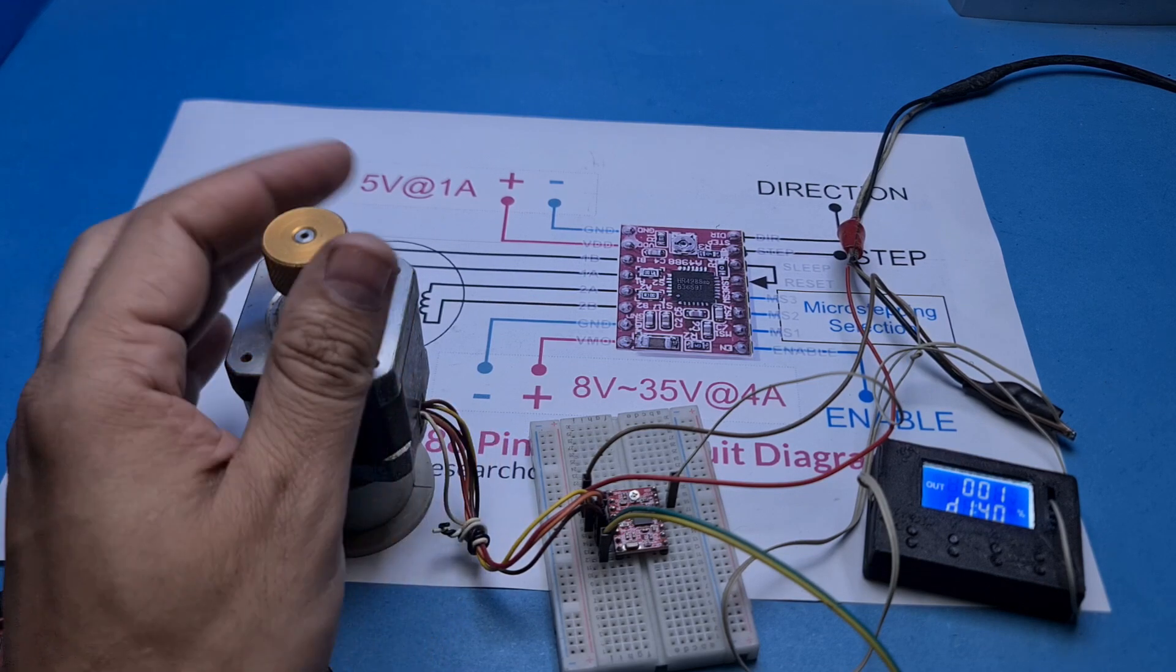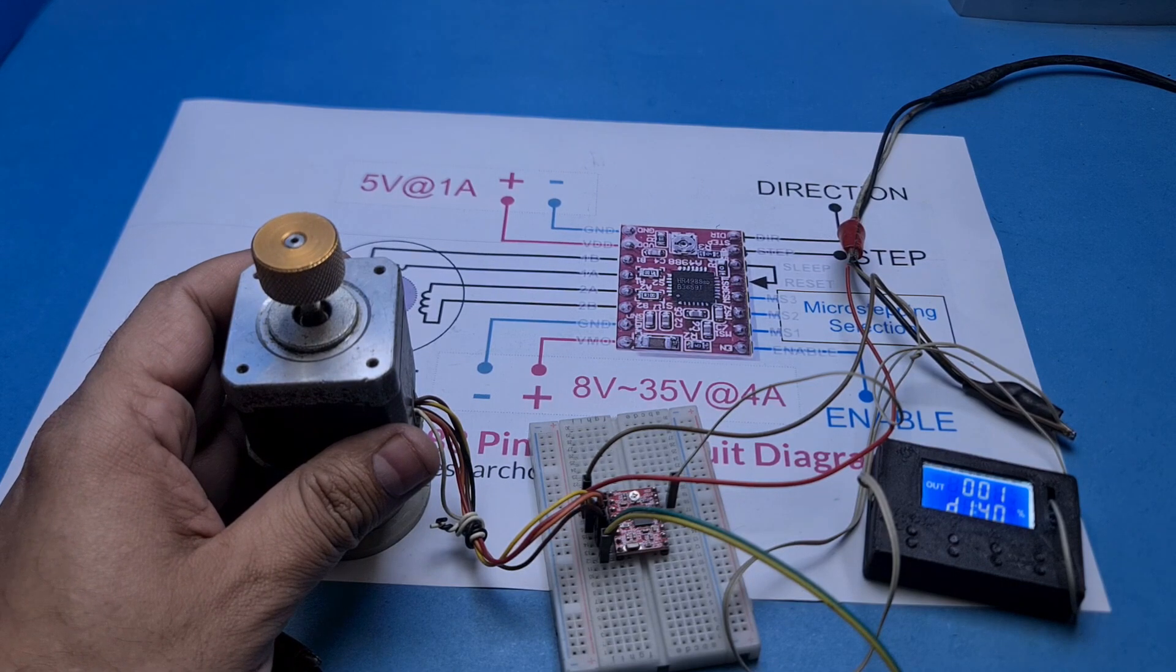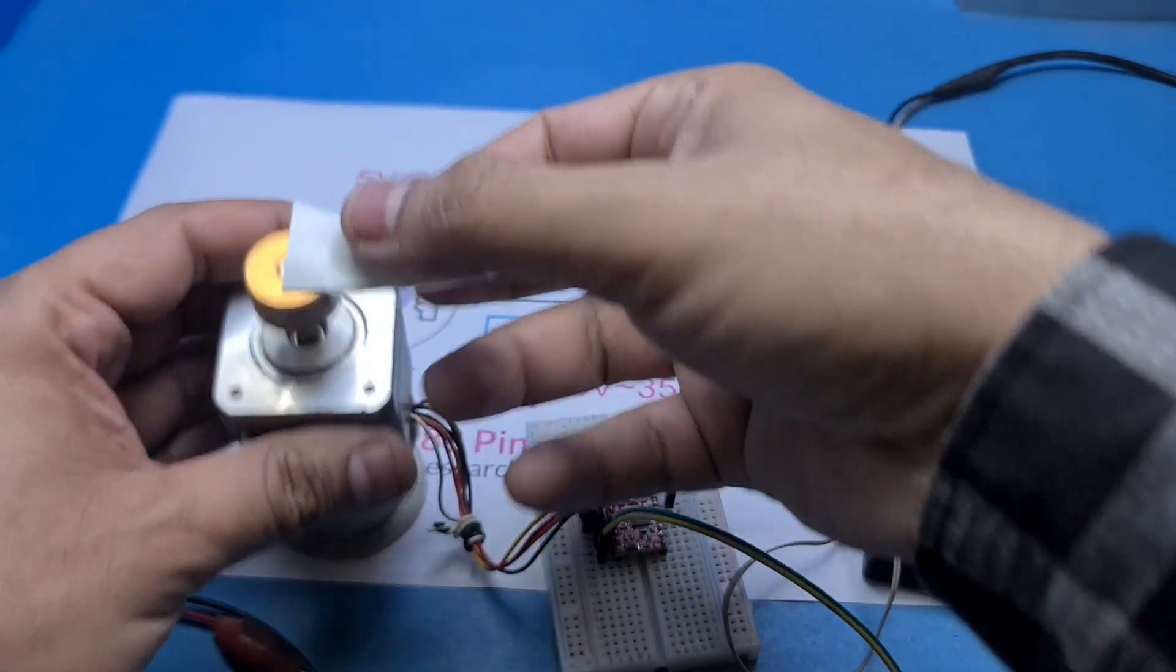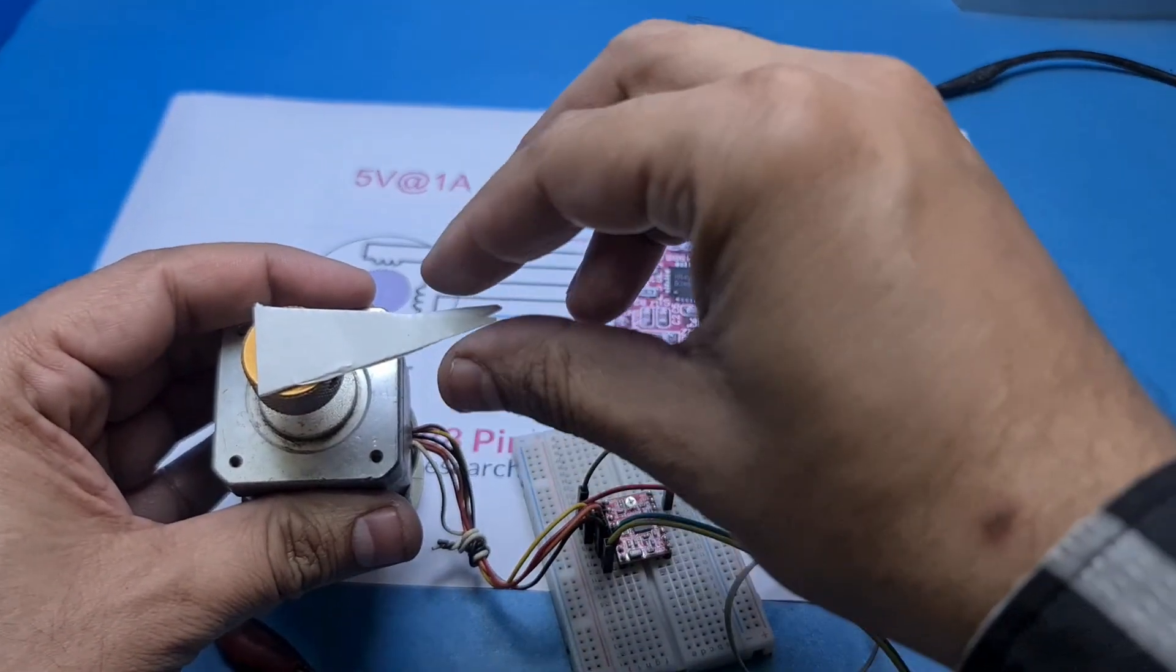I will now turn on the stepper motor power supply. Maybe I should cut and attach a tape on the motor rotor to make the movement a bit more visible for you.